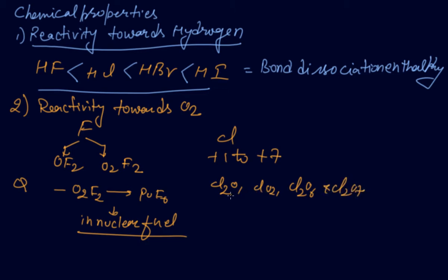ClO2 is used as a bleaching agent for paper pulp and in water treatment.